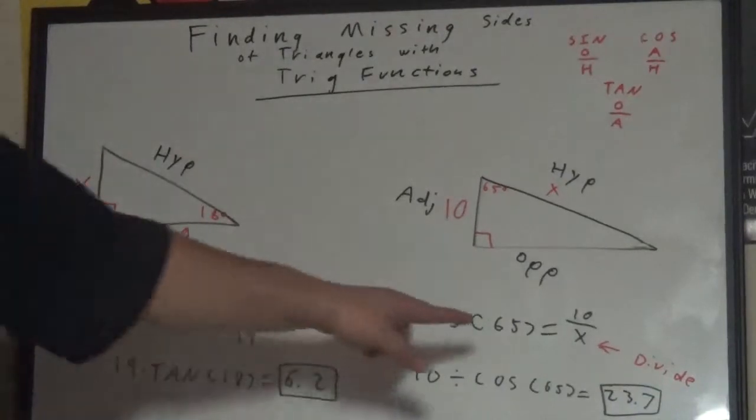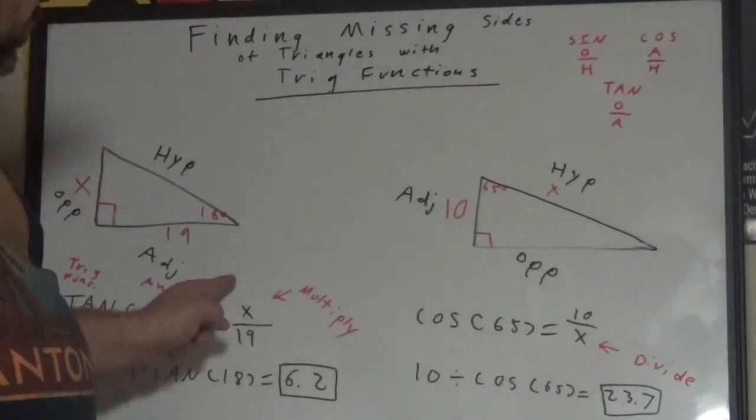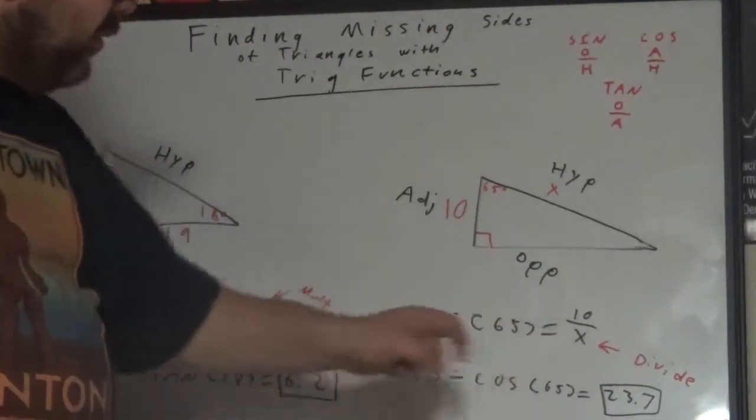is the x on bottom. When it's on top, you multiply. When it's on bottom, you divide.